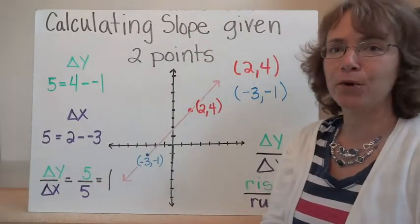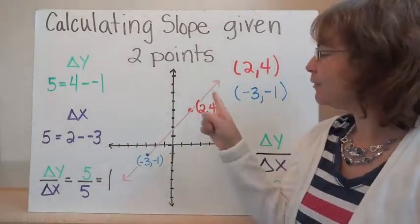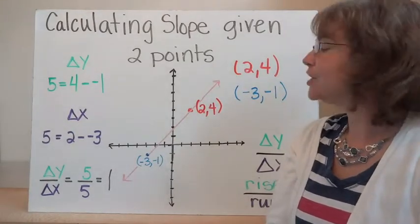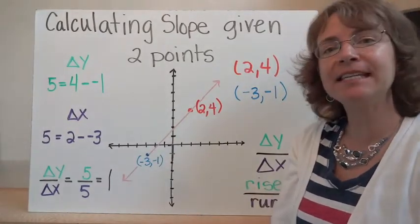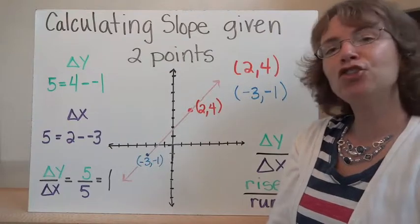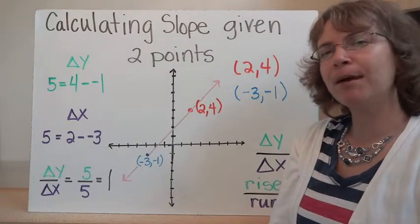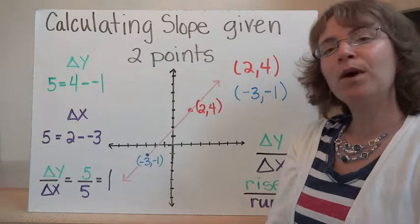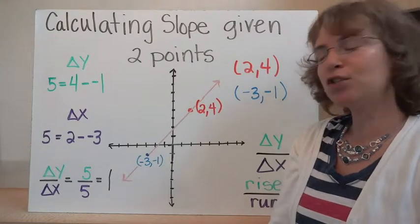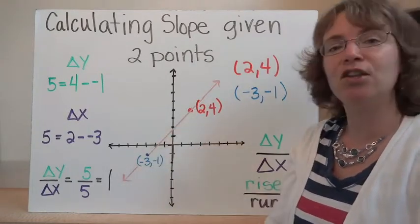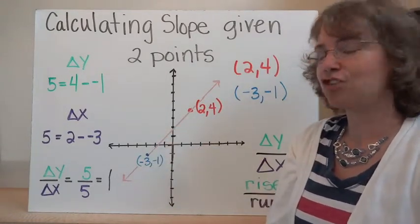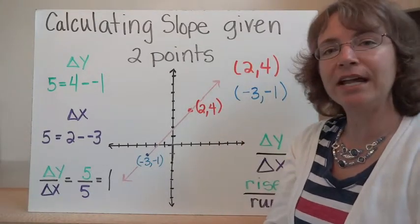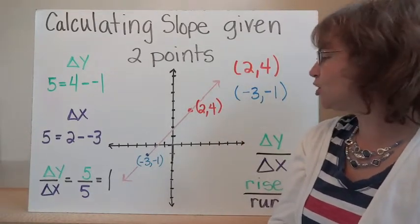Calculating the slope given two points. If we have two coordinate points, we can calculate the slope of a line, or how steep that line is. We can do that by looking at both the y direction and the x direction — how much we've changed between the points in each direction — and then looking at the ratio between the two.